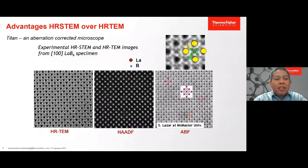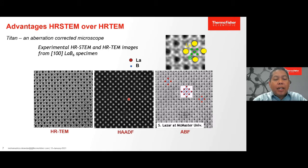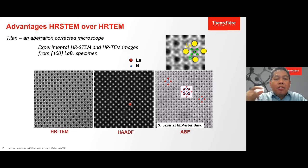The last detector is the bright field detector. It collects partially coherent electrons scattered at very small angles. The contrast looks similar to what we have in conventional TEM. An example shows the high-resolution TEM and high-resolution STEM images from lanthanum hexaboride specimens at the crystal plane of 100. The high-resolution TEM image shows very compact atomic arrangements, whereas the high-resolution STEM HAADF image shows more apparent lanthanum atom positions.